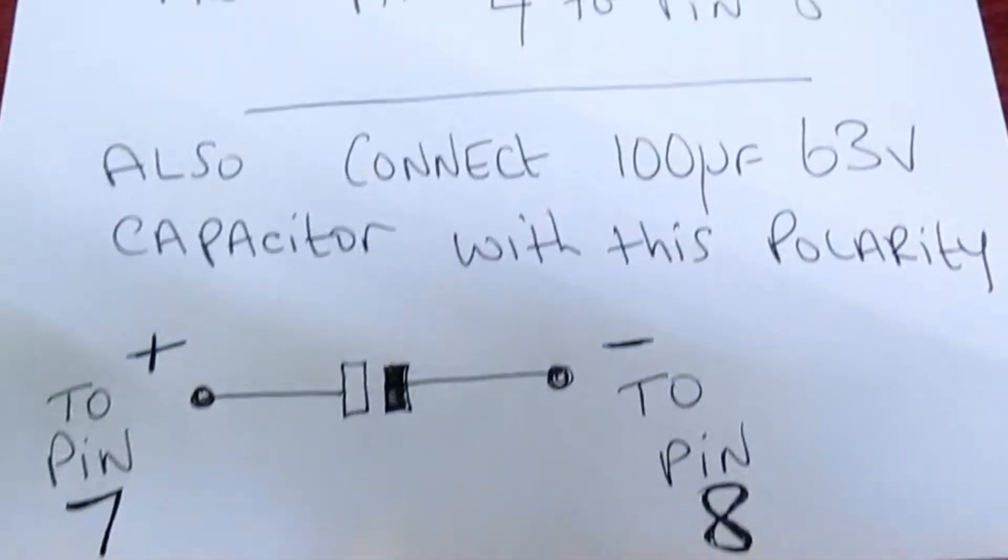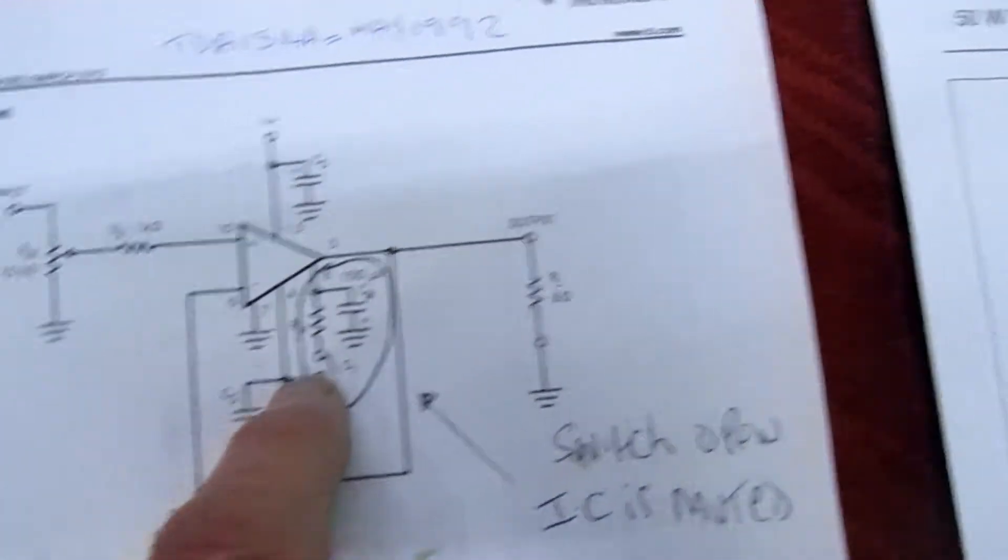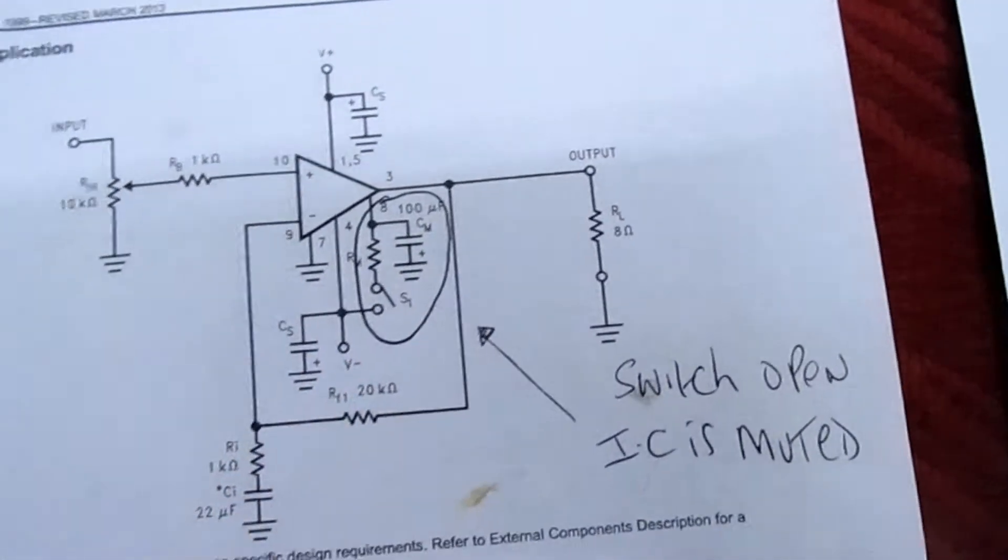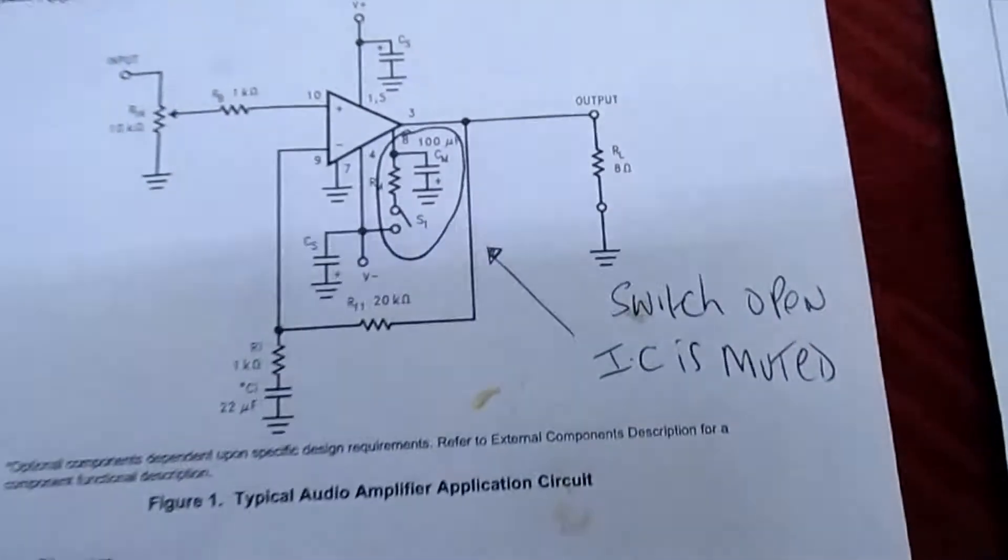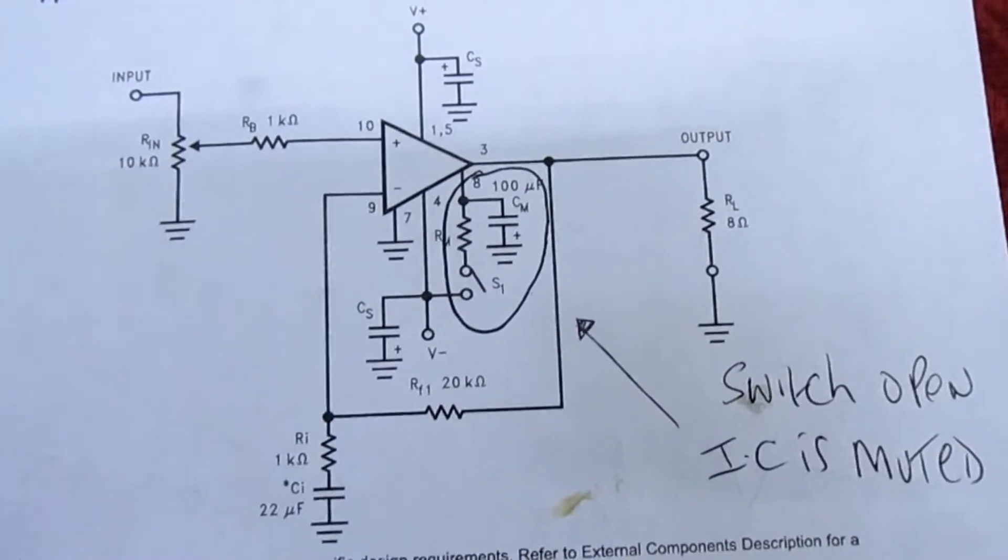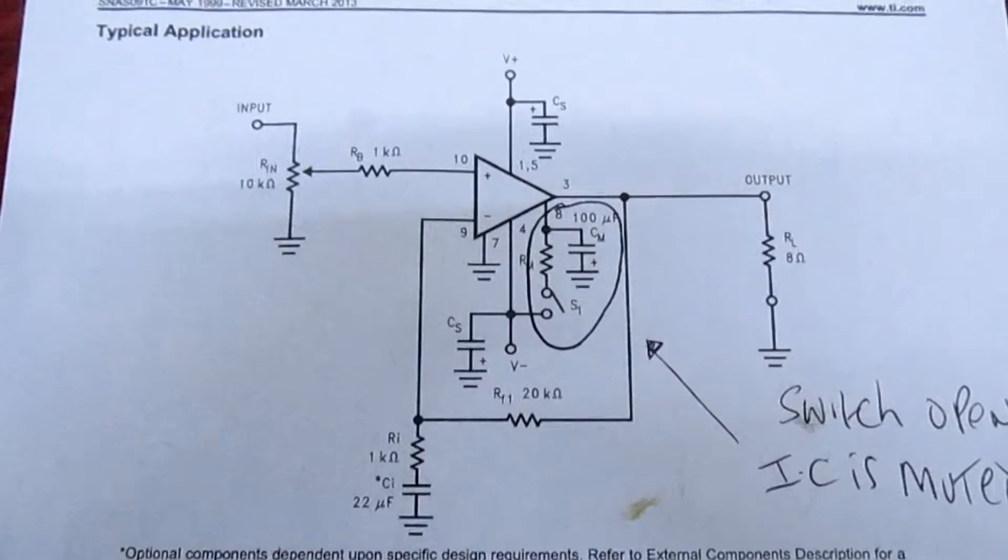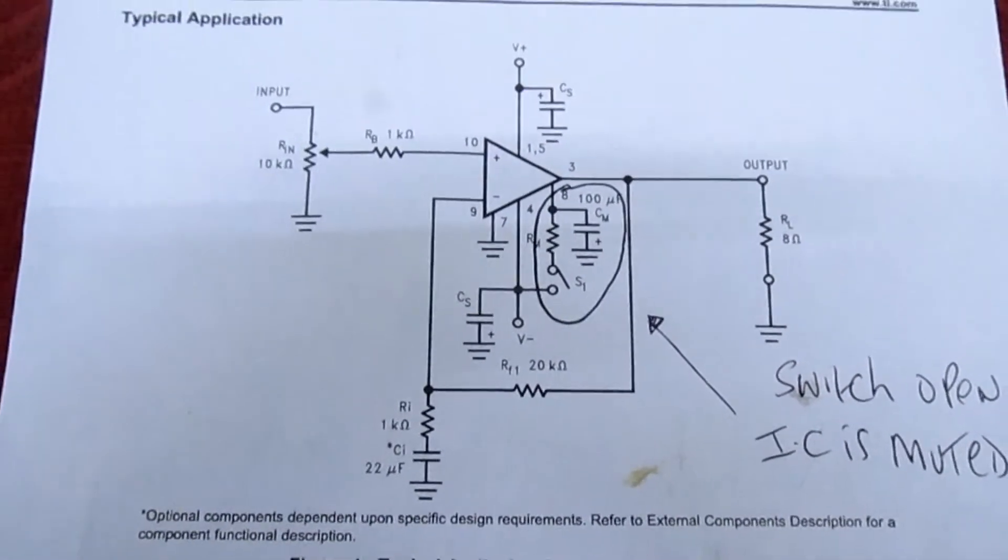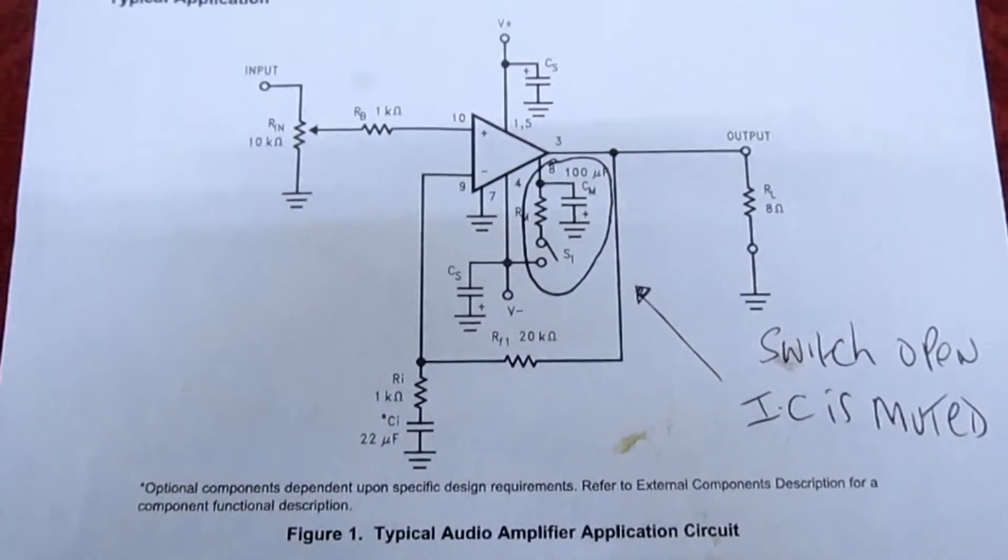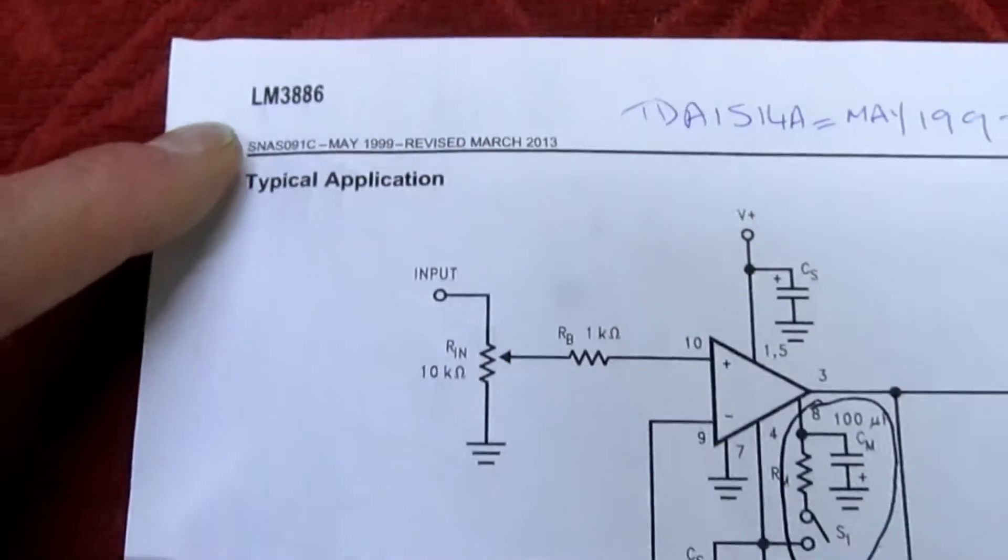The extra two parts we're going to need are a 100 microfarad capacitor and a 22k resistor. Rather than play about with the amplifier, I've actually mounted these extra two parts on the little printed circuit board. If you just give me a few minutes, I'll show you the actual pin compatibility and what you need to do to fit the LM3886 in place of the TDA1541.